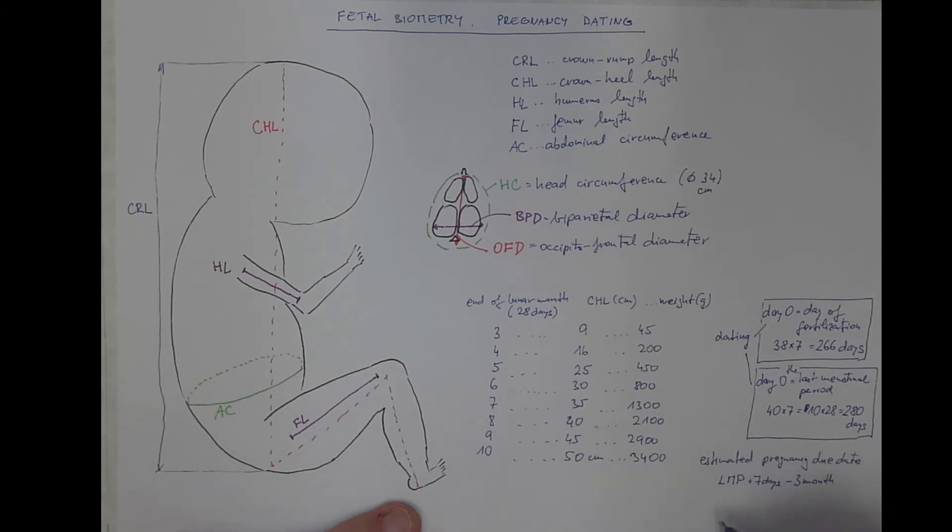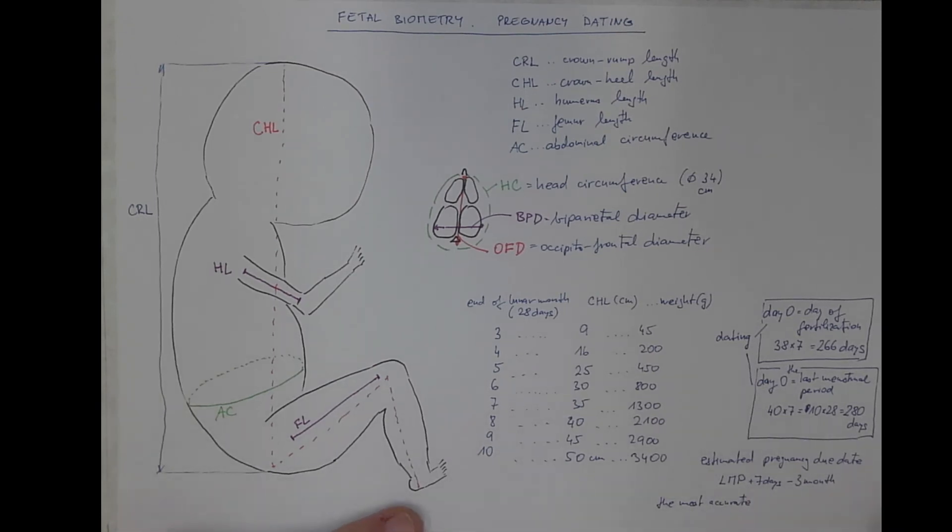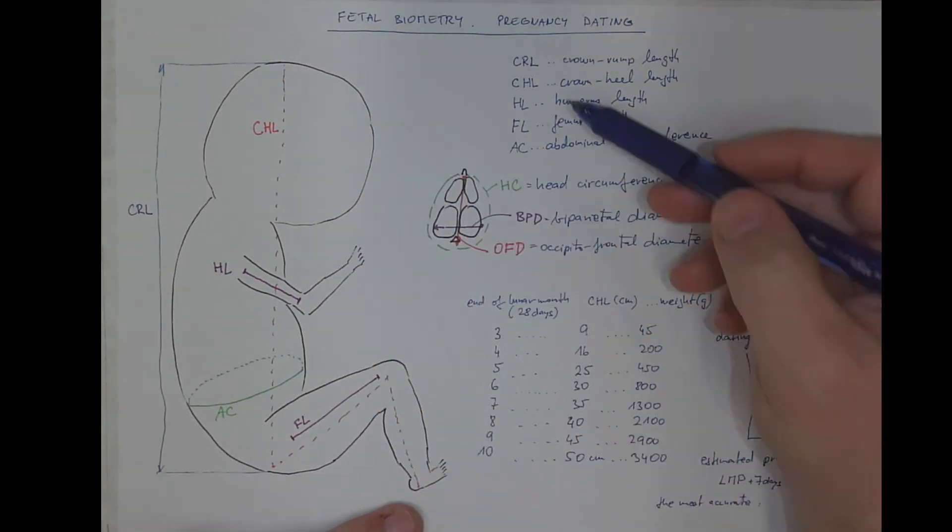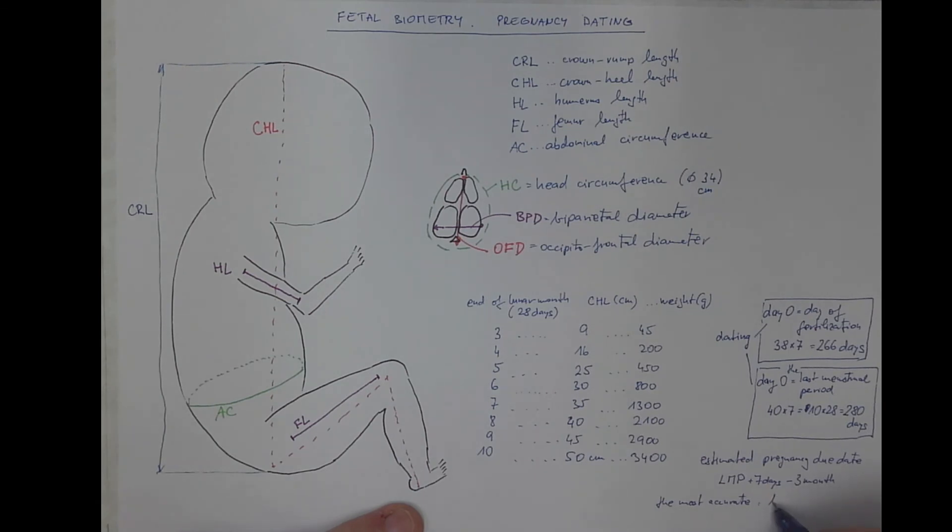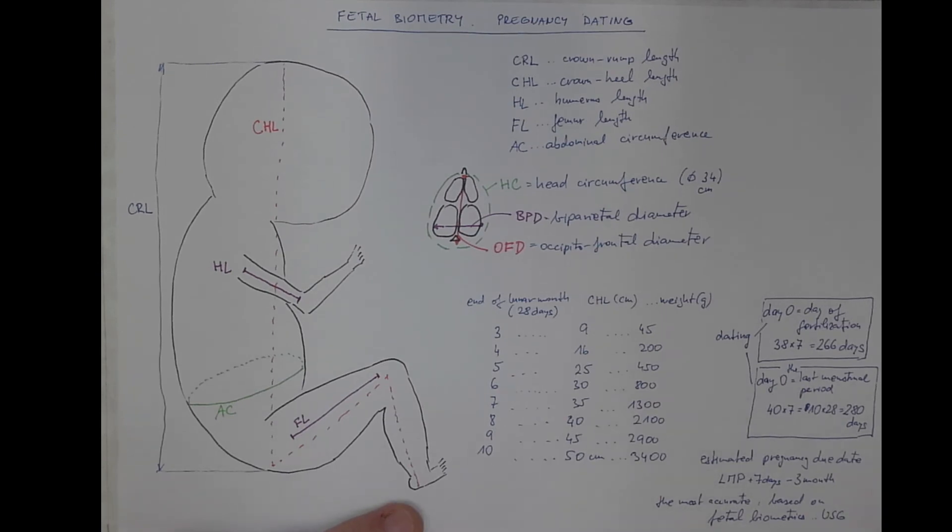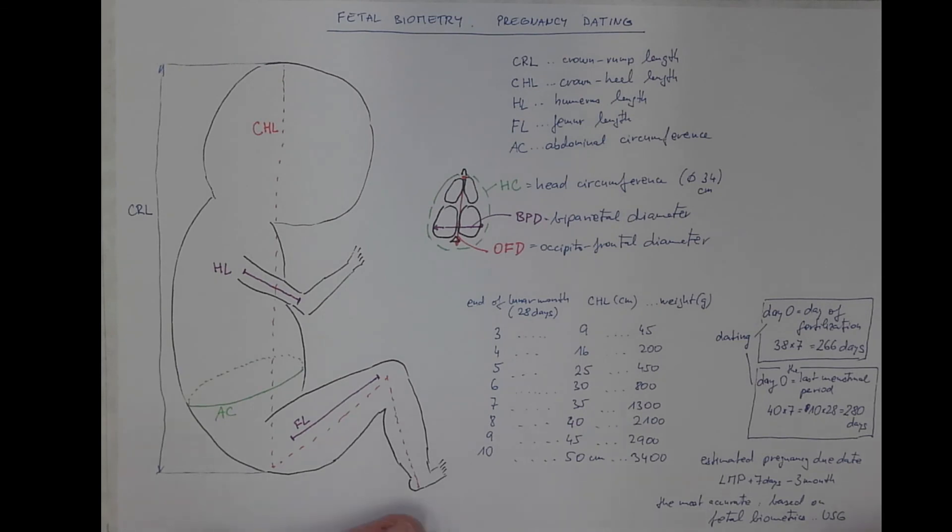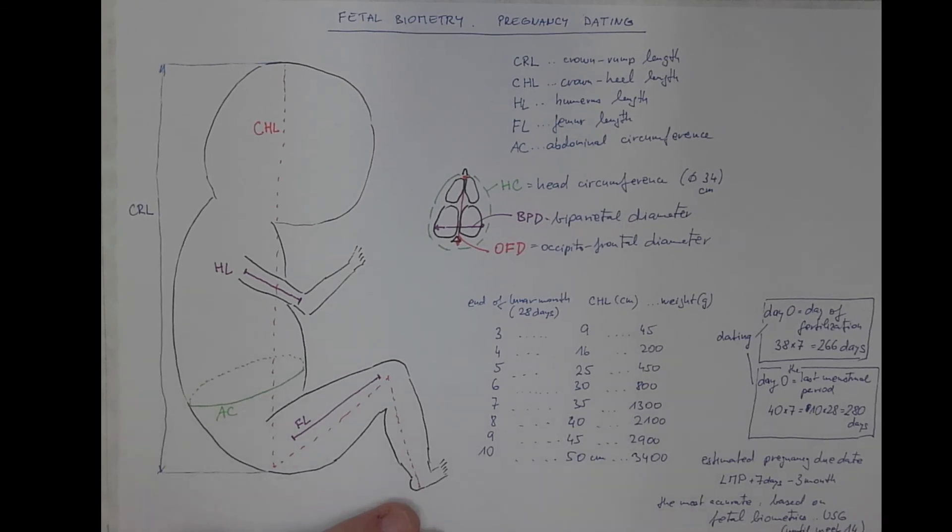The more accurate way and the preferred way in medicine these days are the most accurate estimation of the pregnancy due date. It's based upon the biometry of the fetus by combining all these parameters together. So it's based on fetal biometrics. The data acquired during the ultrasonographic examination until week 14. That's the first regular screening done these days.